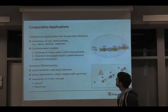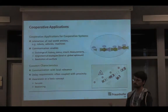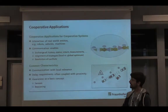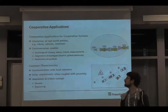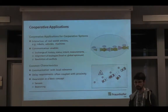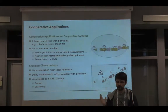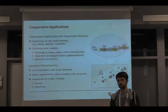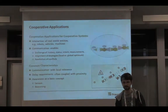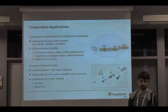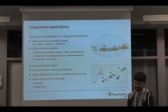Starting with cooperative applications: they can be a lot of things, but in our domain they are basically systems that interact with each other in the real world and we want them to exchange information. Communication allows us to exchange history, status, intent for future systems, measurements, and all these different things — which allows us to align strategies, like we saw with crossing the intersection, and also maybe resolution of conflicts. Basically, two cars at the same point in time would be a conflict.